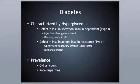In terms of prevalence, older individuals tend to have more cases of diabetes than younger people, even though we do see some younger individuals getting Type 2 diabetes. There are also racial disparities — Native Americans, African Americans, Hispanics, and Asian populations tend to have a higher incidence of diabetes.